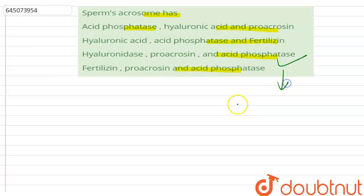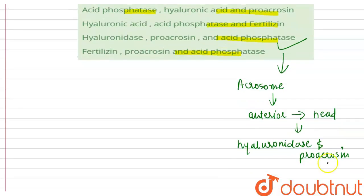Acid phosphatase is in the acrosome, as the acrosome present at the anterior part of the head of the sperm releases the enzymes hyaluronidase and acrosin or pro-acrosin, and also acid phosphatase.